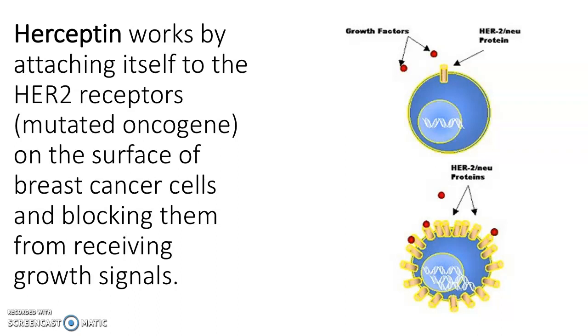But when there's a mutation in this gene, it can overproduce these receptors. And then more growth factor has more opportunities to bind to it. And that's going to cause overgrowth in the tumor, so in the breast tissue.